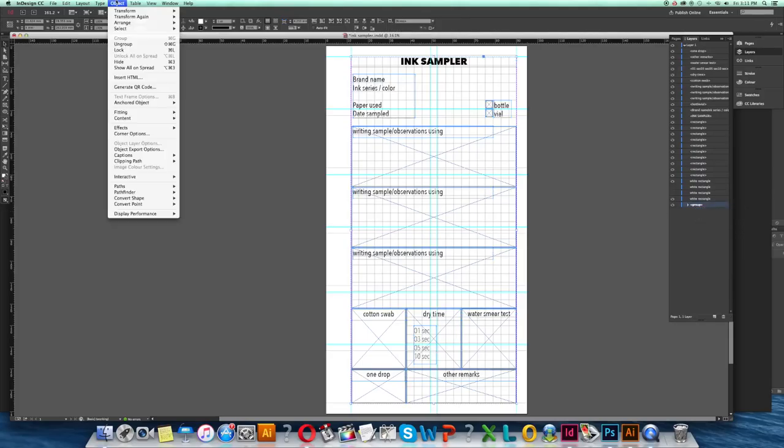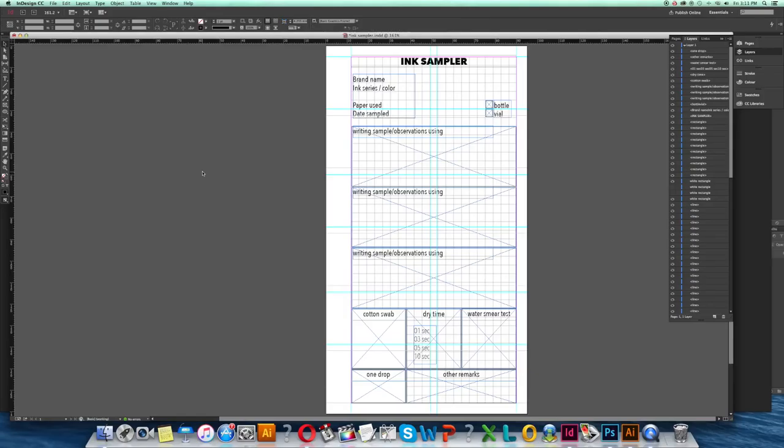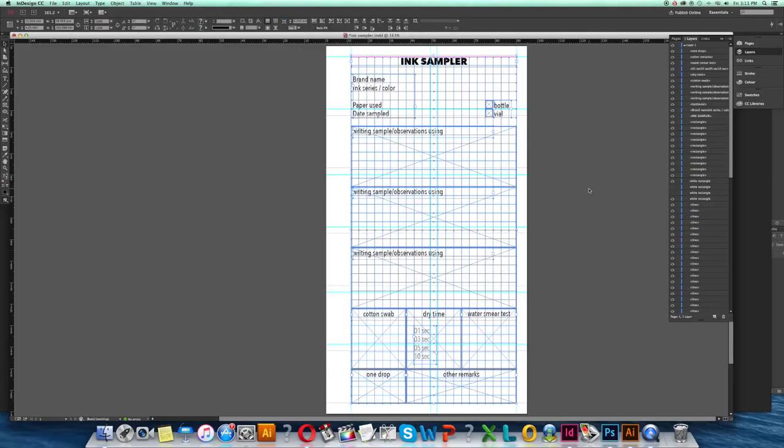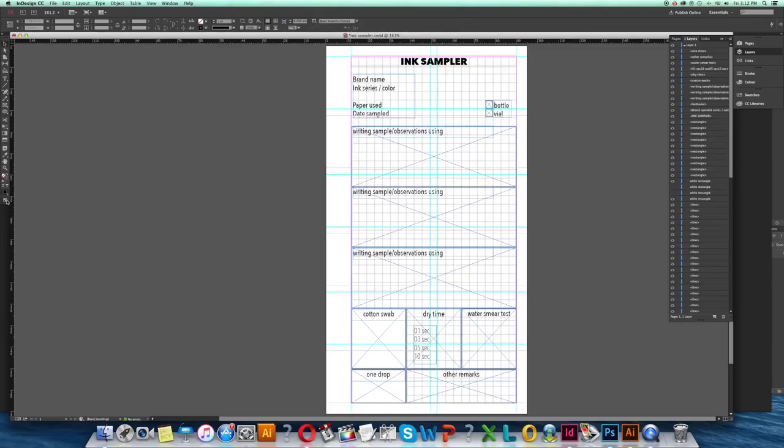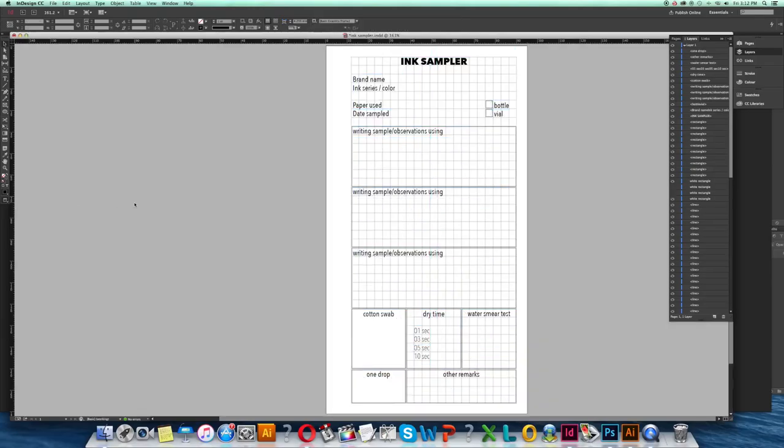I used Adobe InDesign to design the actual pages for the ink sampler book. I love the grid that I'm using for my own planner pages. I find them very useful and I have an entire playlist about my planner pages which I'll link down below.